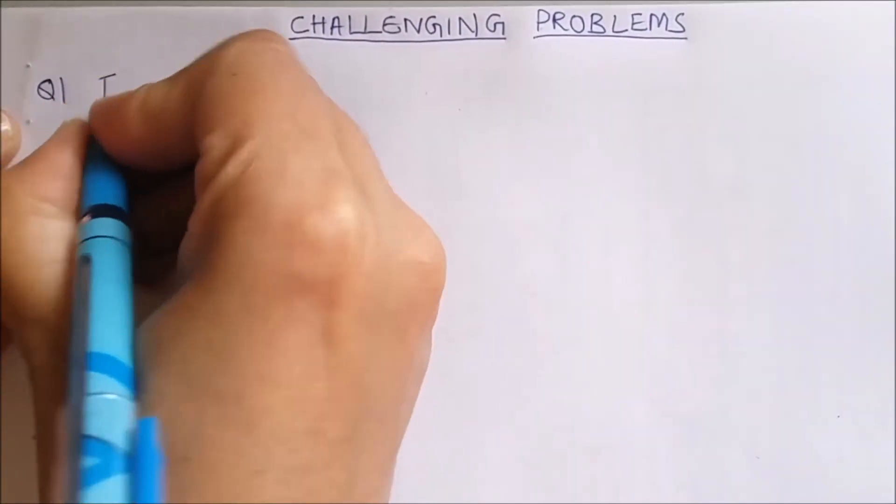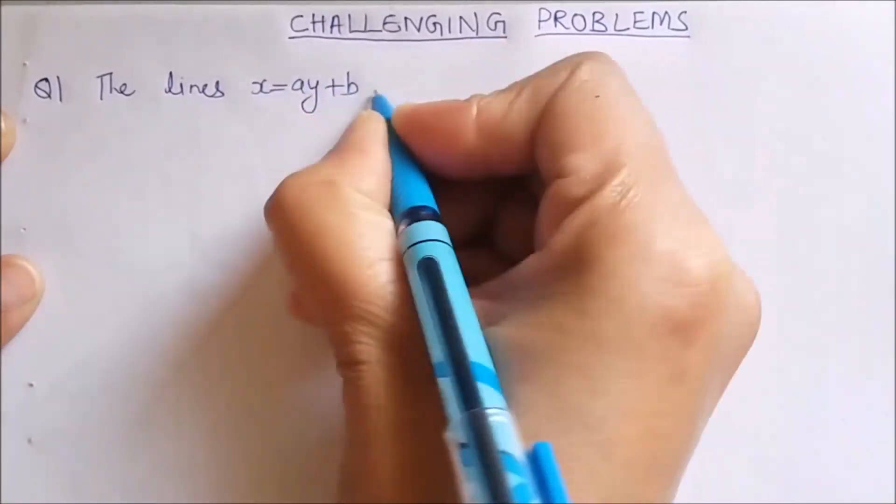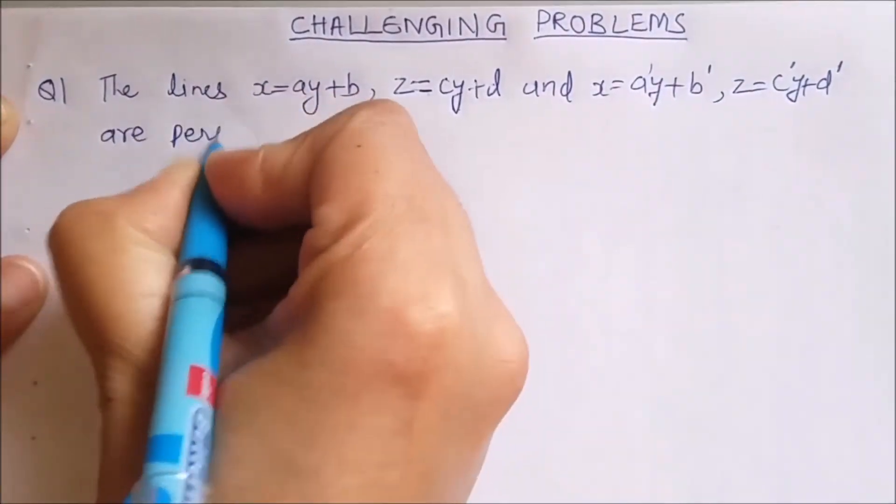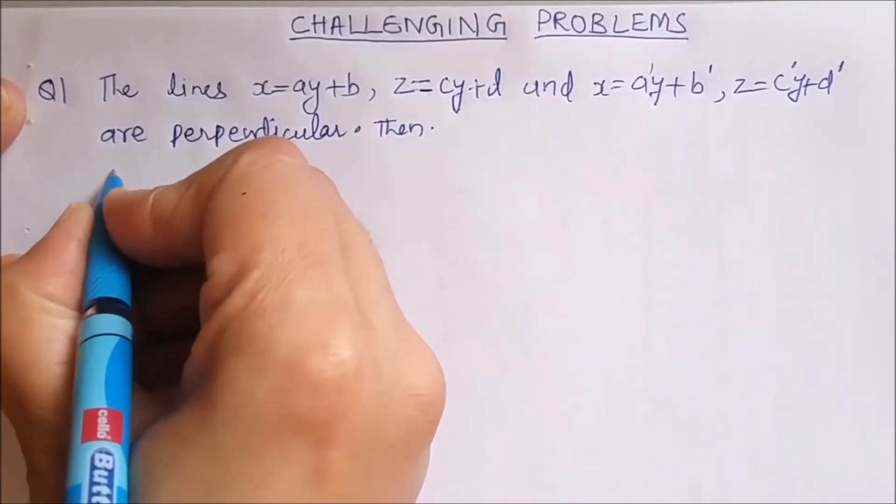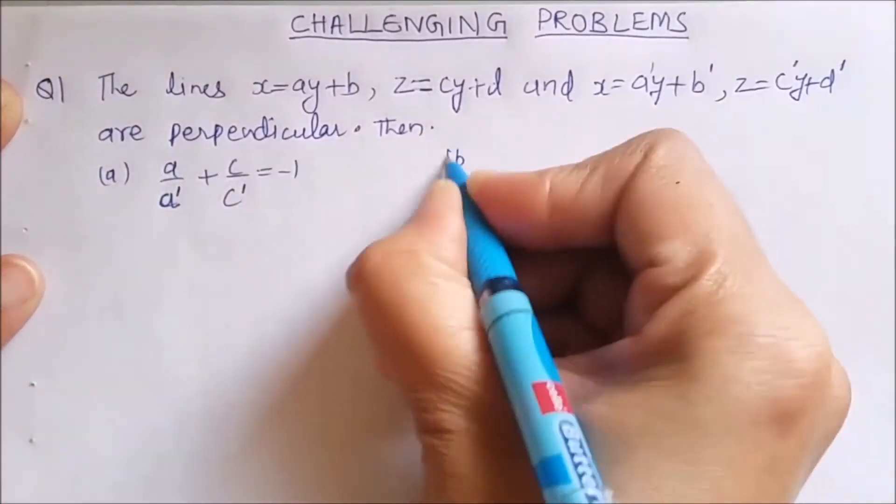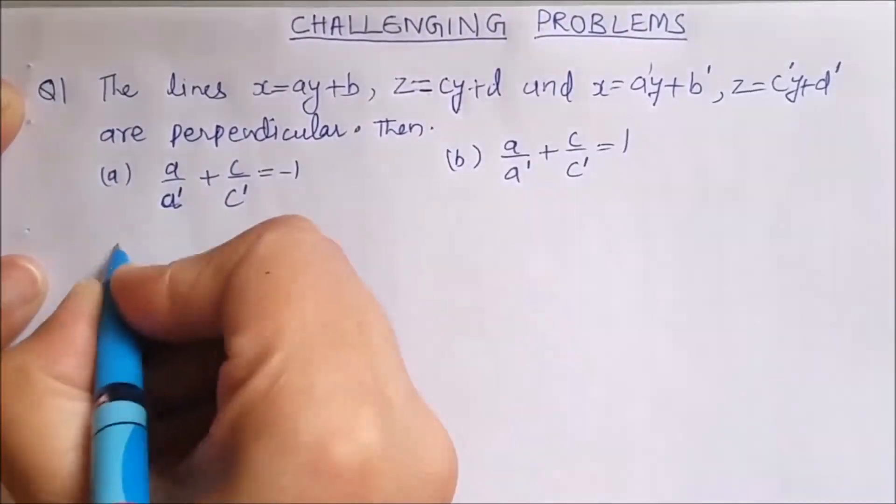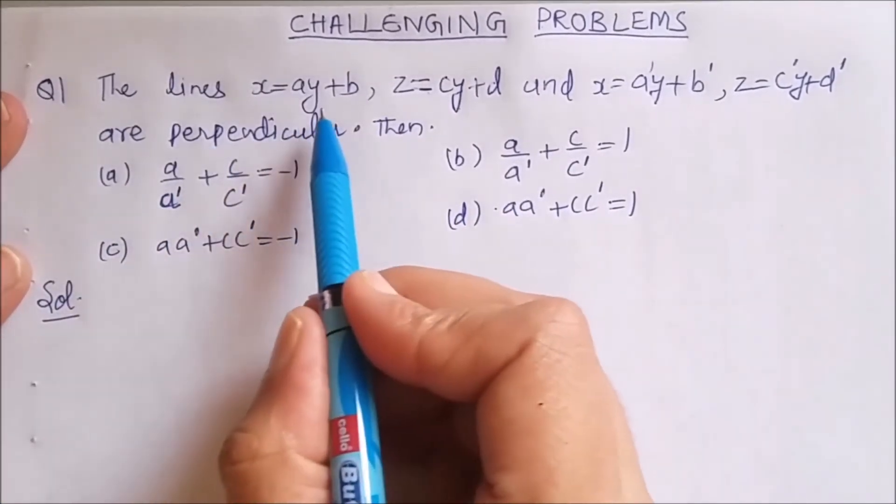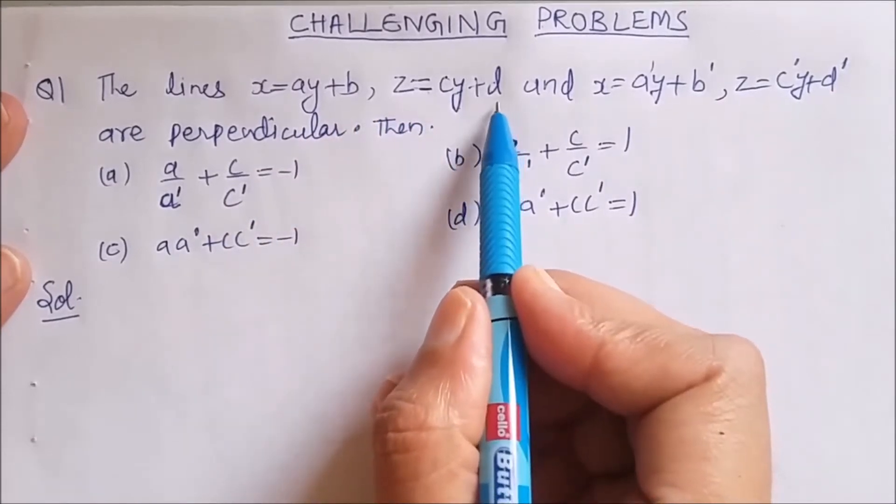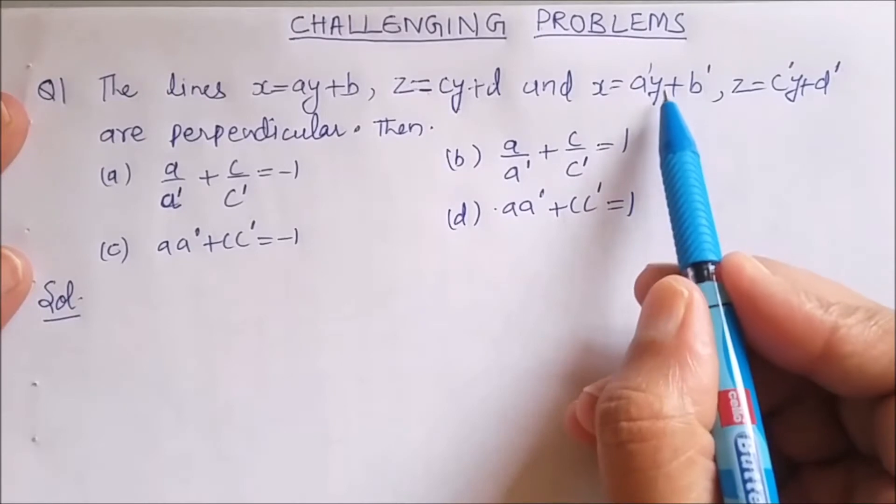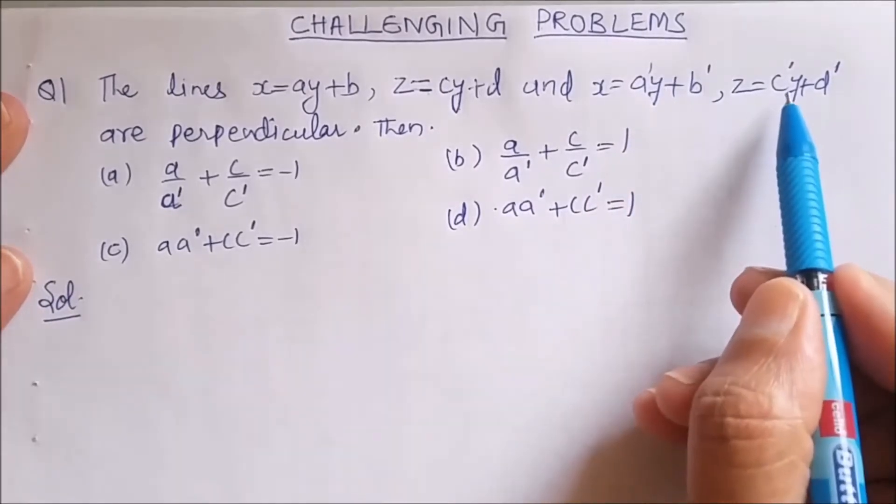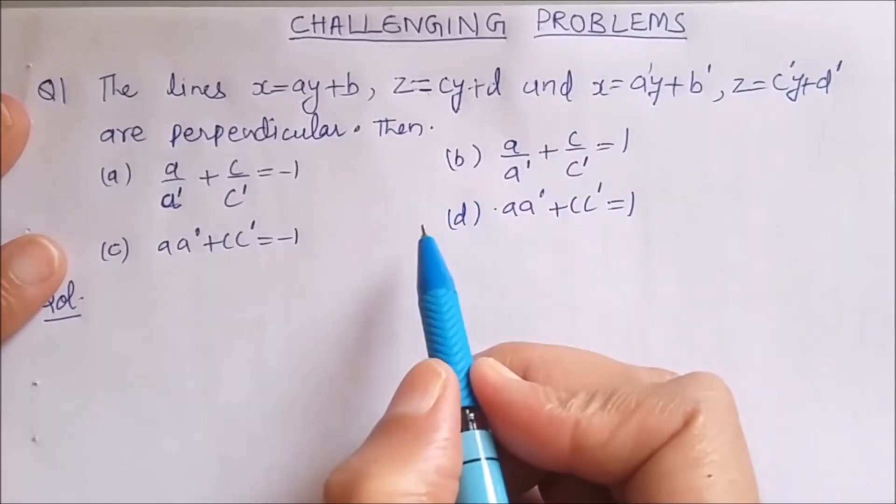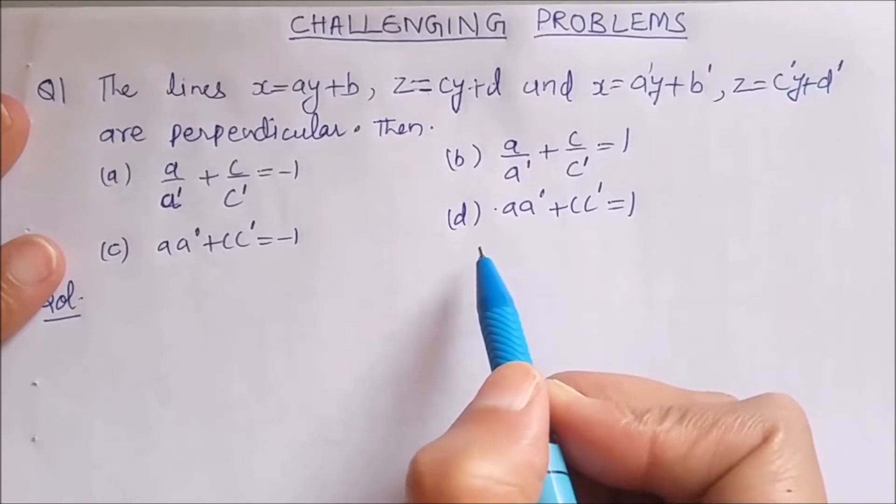Question number 1. The lines x = ay + b, z = cy + d and x = a'y + b', z = c'y + d' are perpendicular. Then these are the options. One of these options is the correct option. So let us start how to do.